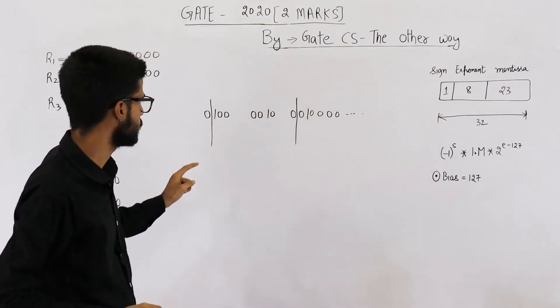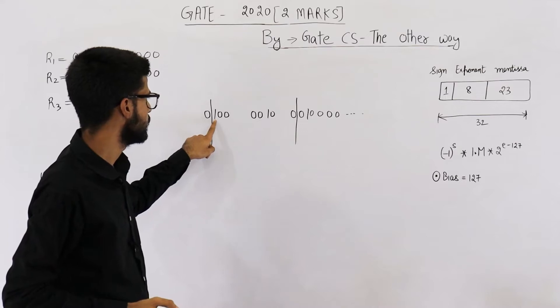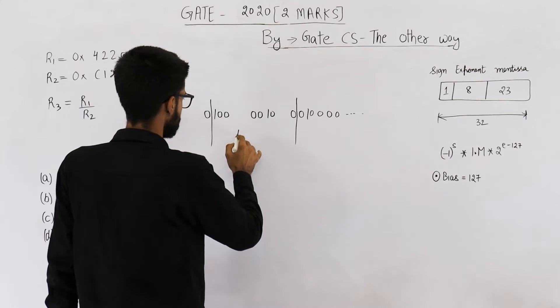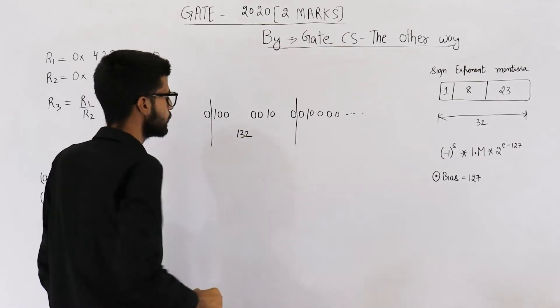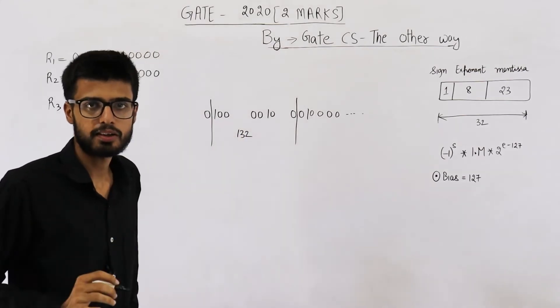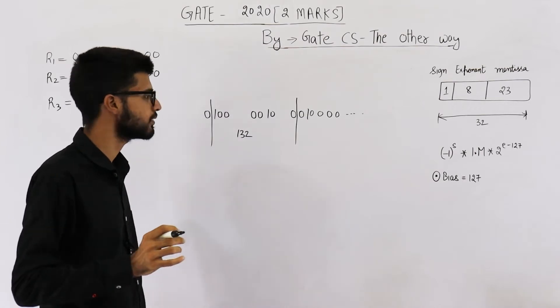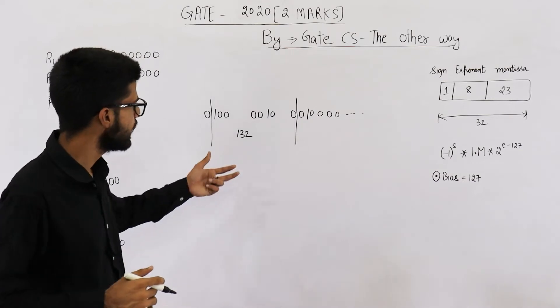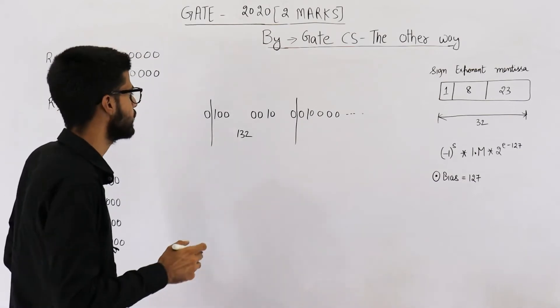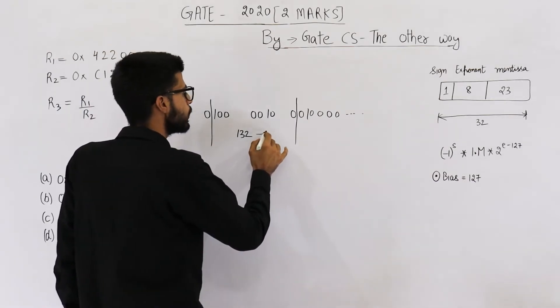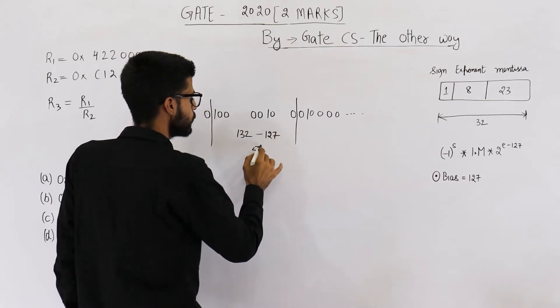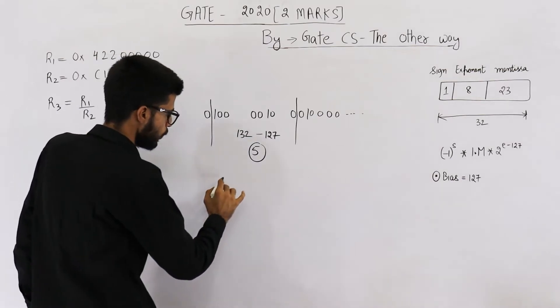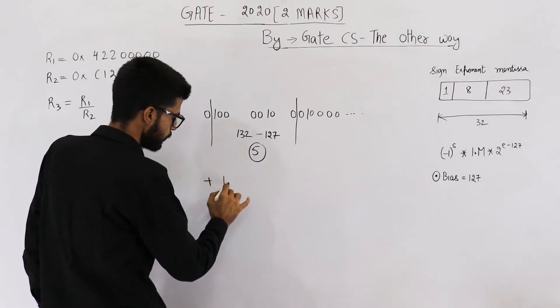Now what is exponent? It is 128 plus 4 which is equal to 132. This is the biased exponent. Now while saving this number, surely 127 would have been added as a bias, so let's retrieve the actual exponent by subtracting 127.